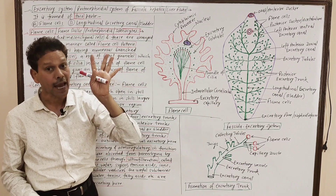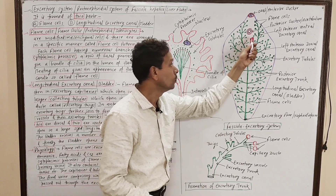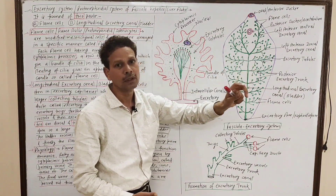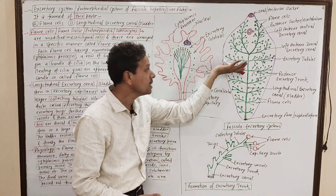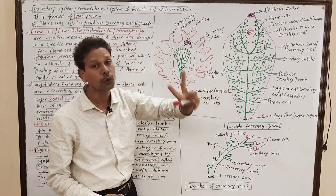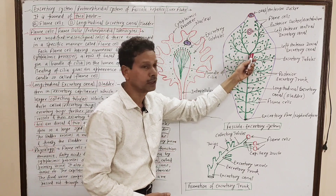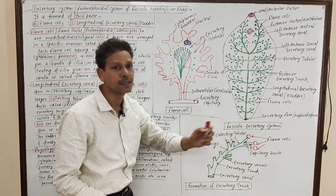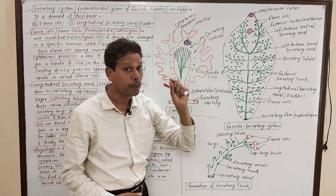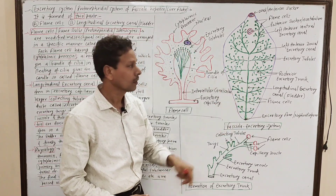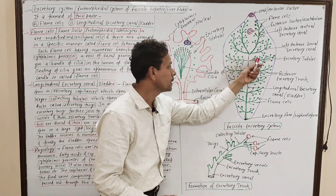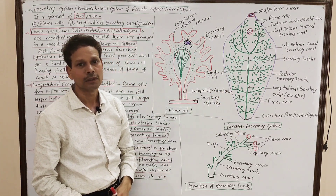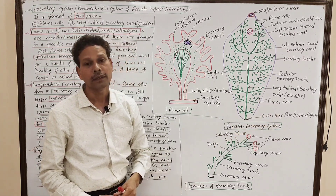There are four excretory trunks in the anterior region — two ventral and two dorsal excretory trunks, right and left — which unite behind the posterior sucker. All these anterior excretory trunks open into the longitudinal excretory canal, or bladder. In the posterior region, this bladder receives numerous posterior excretory trunks. Finally, the bladder opens out by a small aperture — the excretory pore, or nephridiopore.